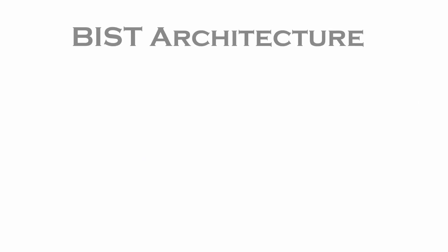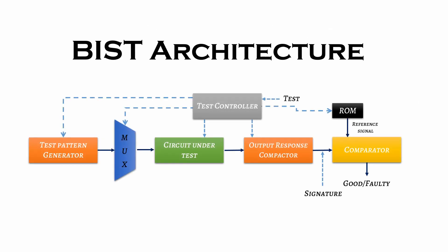The built-in test circuit architecture consists of a test controller, test pattern generator, multiplexer, logic circuit (which is the circuit under test), output response compactor, ROM, and comparator. The test controller controls the modes of operation of the circuit — that is, testing mode or normal mode of operation.